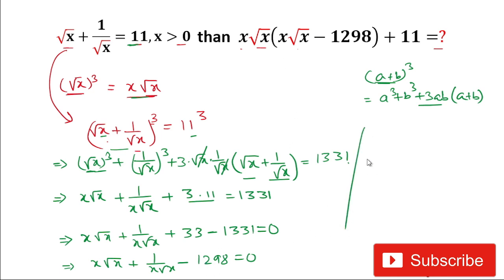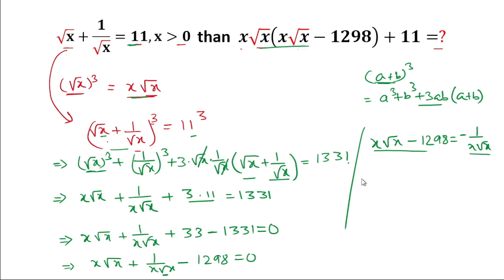Rearranging: x·root(x) - 1298 = -1/(x·root(x)). Multiplying both sides by x·root(x), the right-hand side simplifies: x·root(x)·[x·root(x) - 1298] = -1.